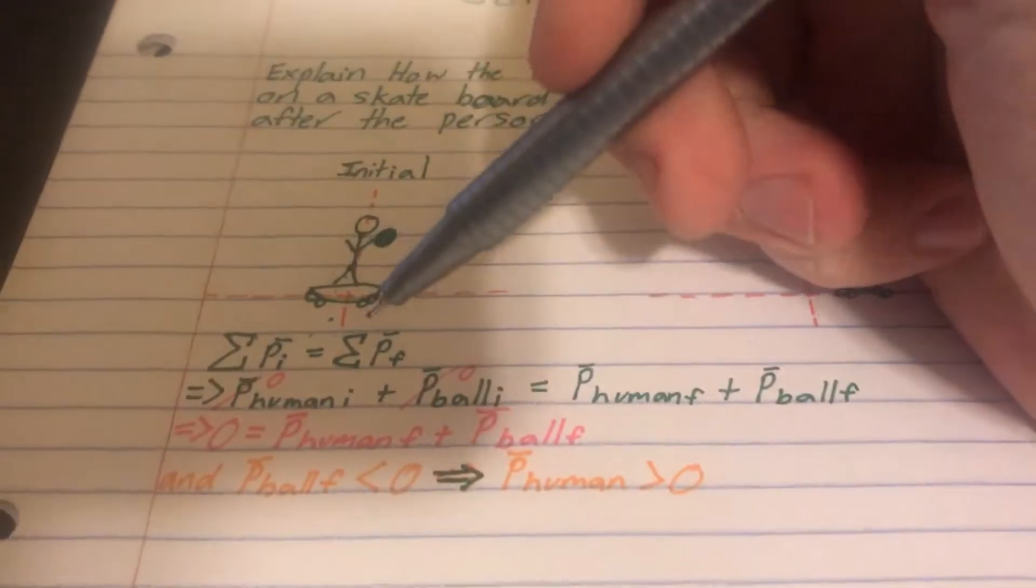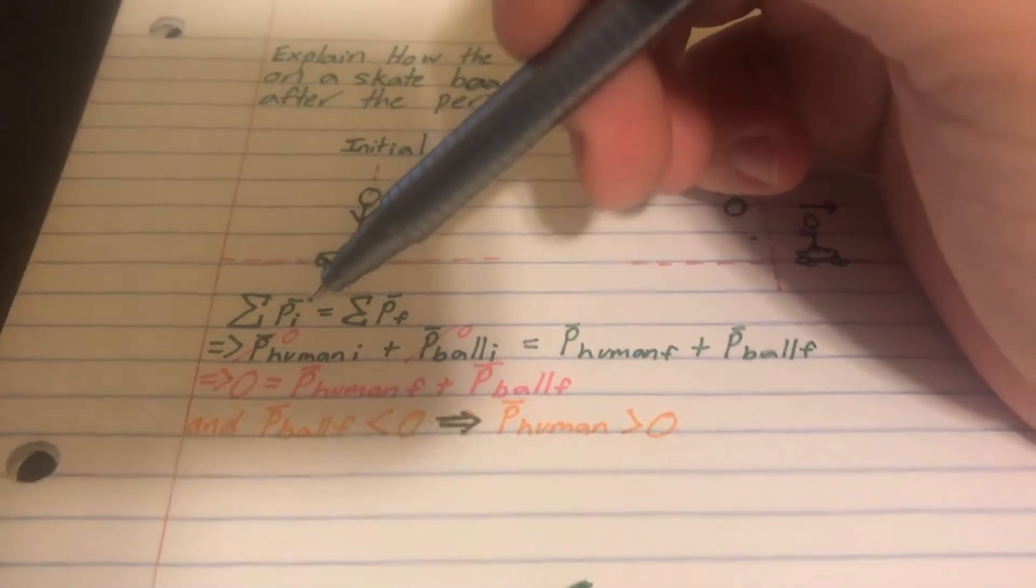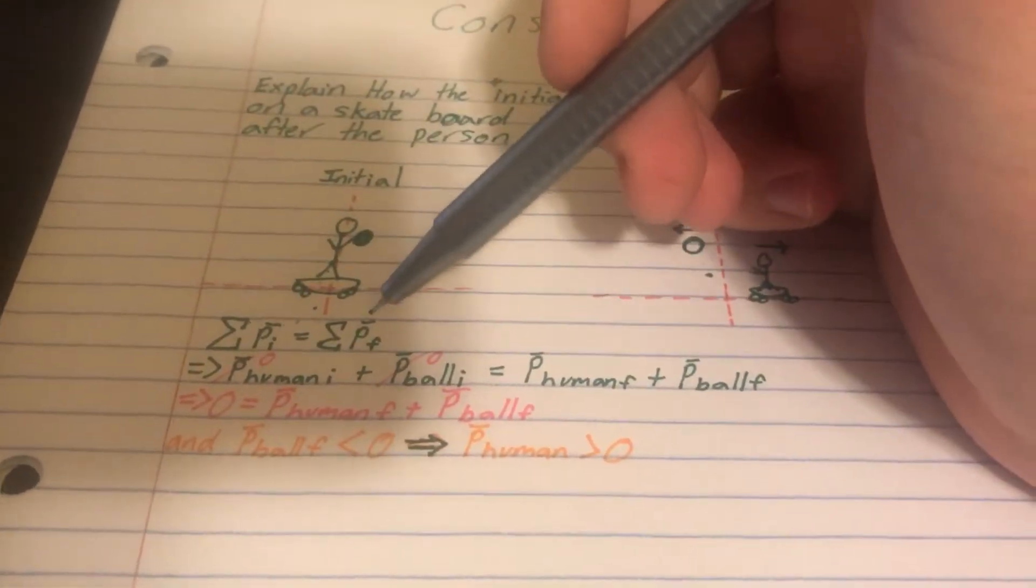So I drew an x and y axis. The sum of the momentum in the initial is the sum of the momentum final.